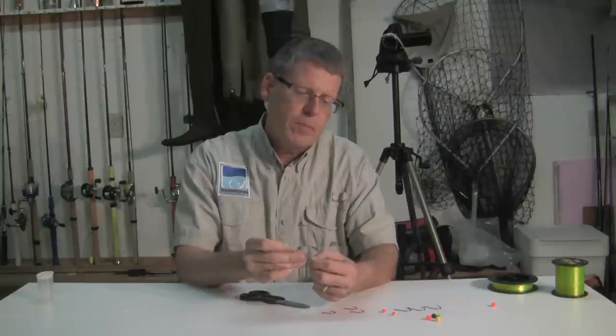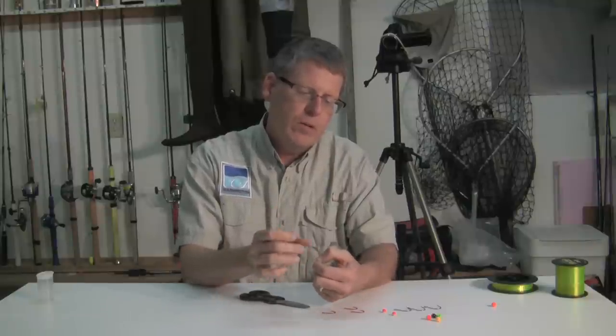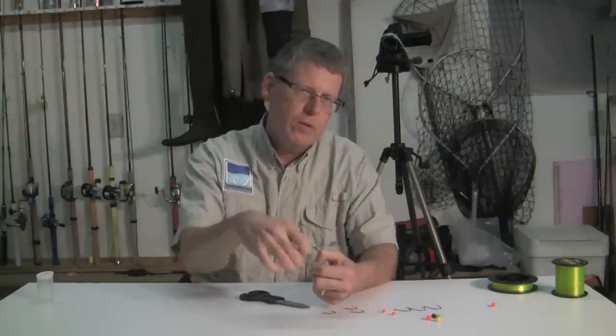So that is your basic egg loop tie with your loop right there. Now you could do things like put in a little bit of yarn into that loop. You could tie a half hitch into the piece of yarn and that would make it very easy to pull it out.